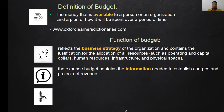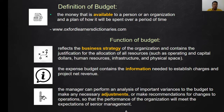Second, information — the expense budget contains the information needed to establish charges, project net profit or revenue, and also information that can be used for adjustment. The manager can perform an analysis of important variances to the budget to make any necessary adjustments or recommendations for changes to operations, so that the performance of the organization will meet the expectations of senior management. In other words, for our type of services, we need to produce lab results at the highest quality possible.